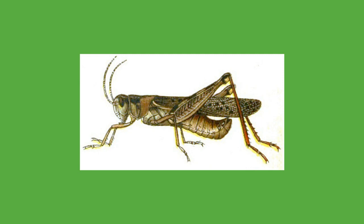Most grasshoppers are polyphagous, eating vegetation from multiple plant sources, but some are omnivorous and also eat animal tissue and animal feces. In general their preference is for grasses, including many cereals grown as crops. The digestive system is typical of insects, with Malpighian tubules discharging into the midgut. Carbohydrates are digested mainly in the crop, while proteins are digested in the caeca of the midgut. Saliva is abundant but largely free of enzymes, helping to move food and Malpighian secretions along the gut. Some grasshoppers possess cellulase, which by softening plant cell walls makes plant cell contents accessible to other digestive enzymes.